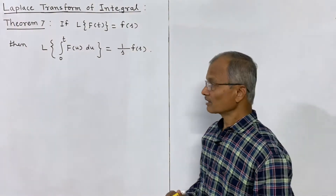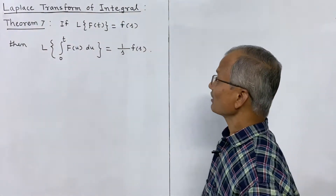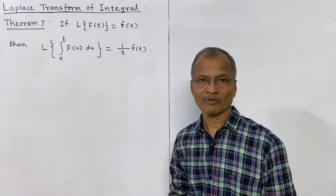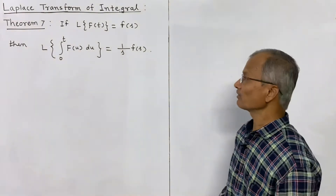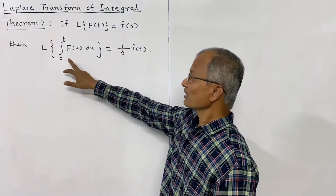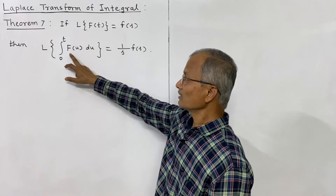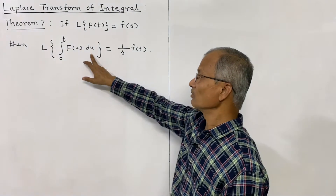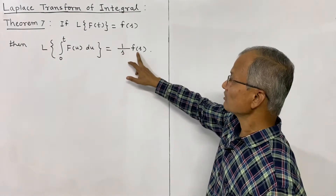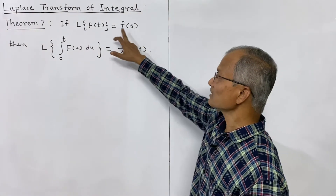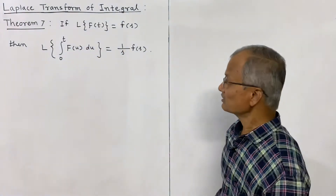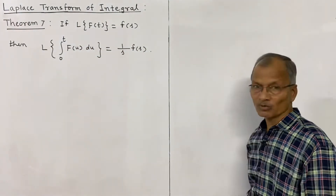Theorem number 7 states that if the Laplace transform of capital F(t) is equal to small f(s), then the Laplace transform of the integral from 0 to t of F(u) du is equal to (1/s)·f(s). Here f(s) is the Laplace transform of capital F(t). This is the theorem that we want to prove.